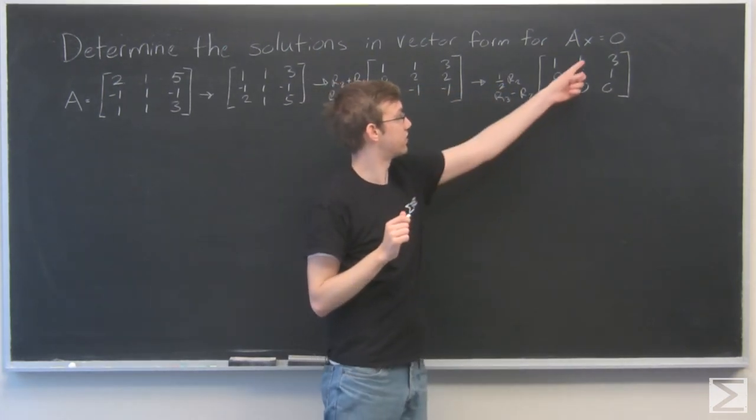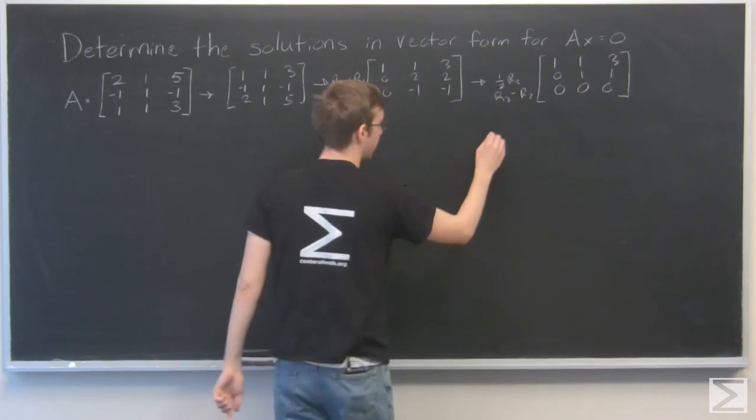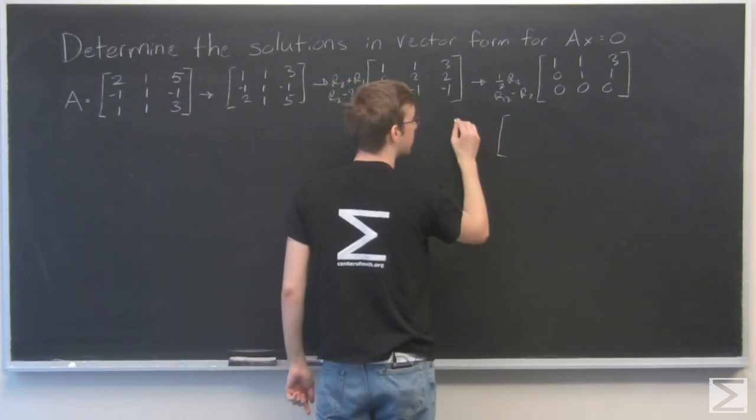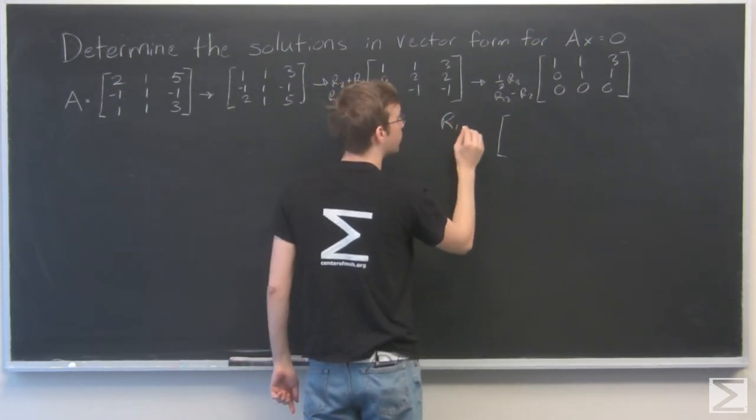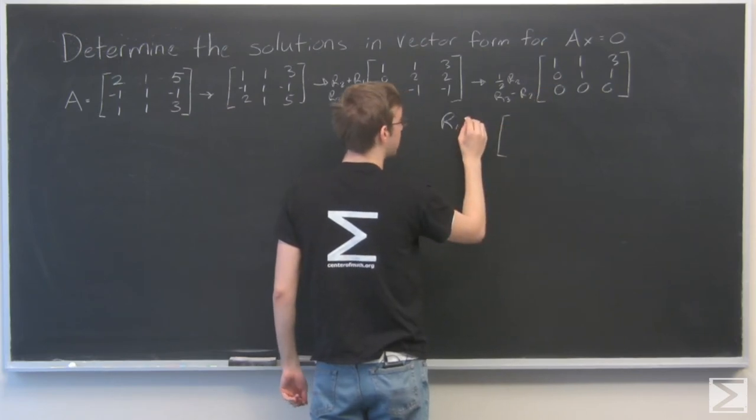OK, now I need to get rid of this 0 in this spot right here. So I will do that by taking row 1 minus row 2.